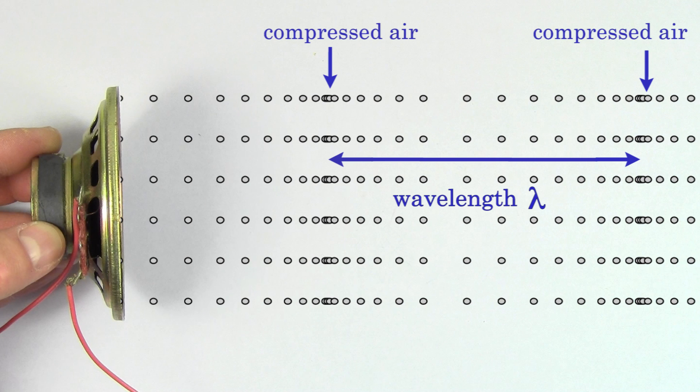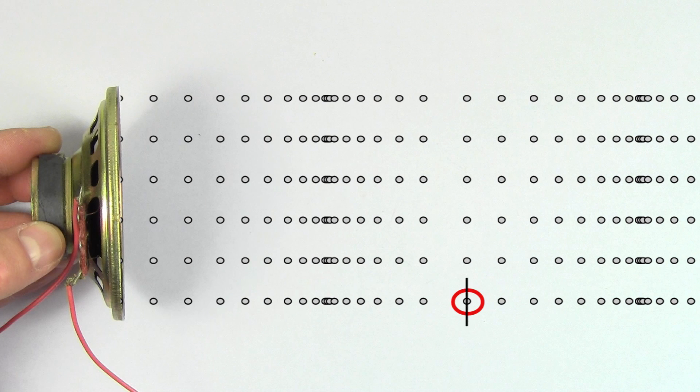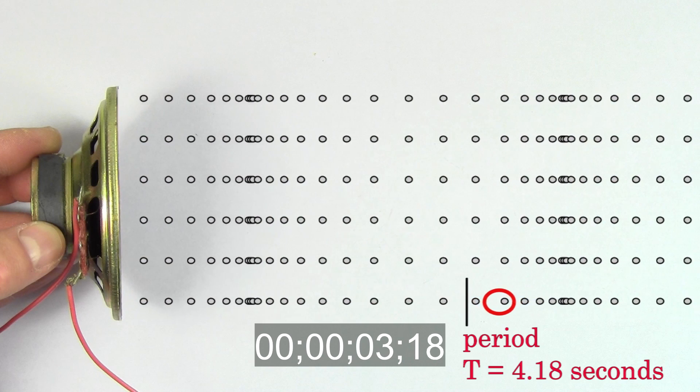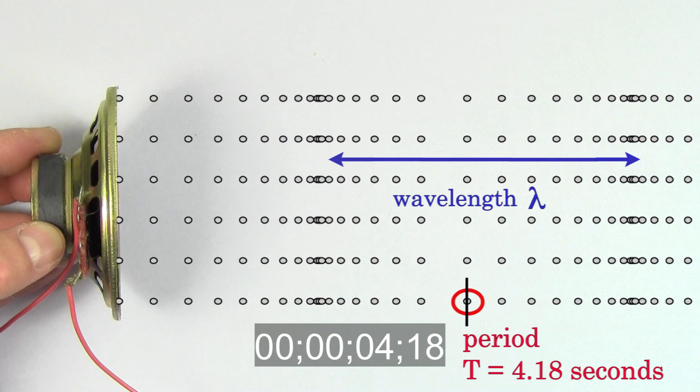Be careful, people get wavelength and period mixed up all the time. The period of a sound wave is the time it takes for an air molecule to oscillate back and forth one time. The wavelength of a sound wave is the distance between two compressed regions of air.